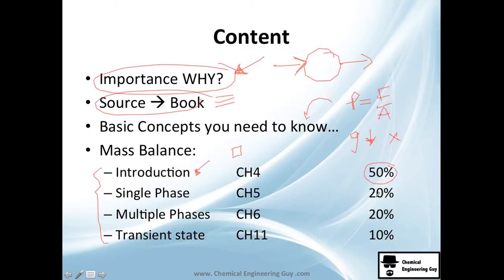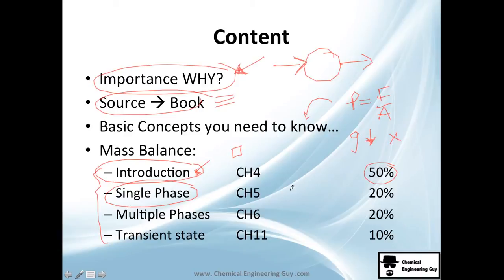Chapter four is about 50% of the course by weight — almost half. If you skip it, you won't get the following 20%, 20%, and 10% sections. Once you get through that, you need to go to chapter five, which is single phase. It's mainly about gases. We see a little about liquids and solids — the advantage of their densities not changing with pressure and temperature — but then we see essentially everything about gases.